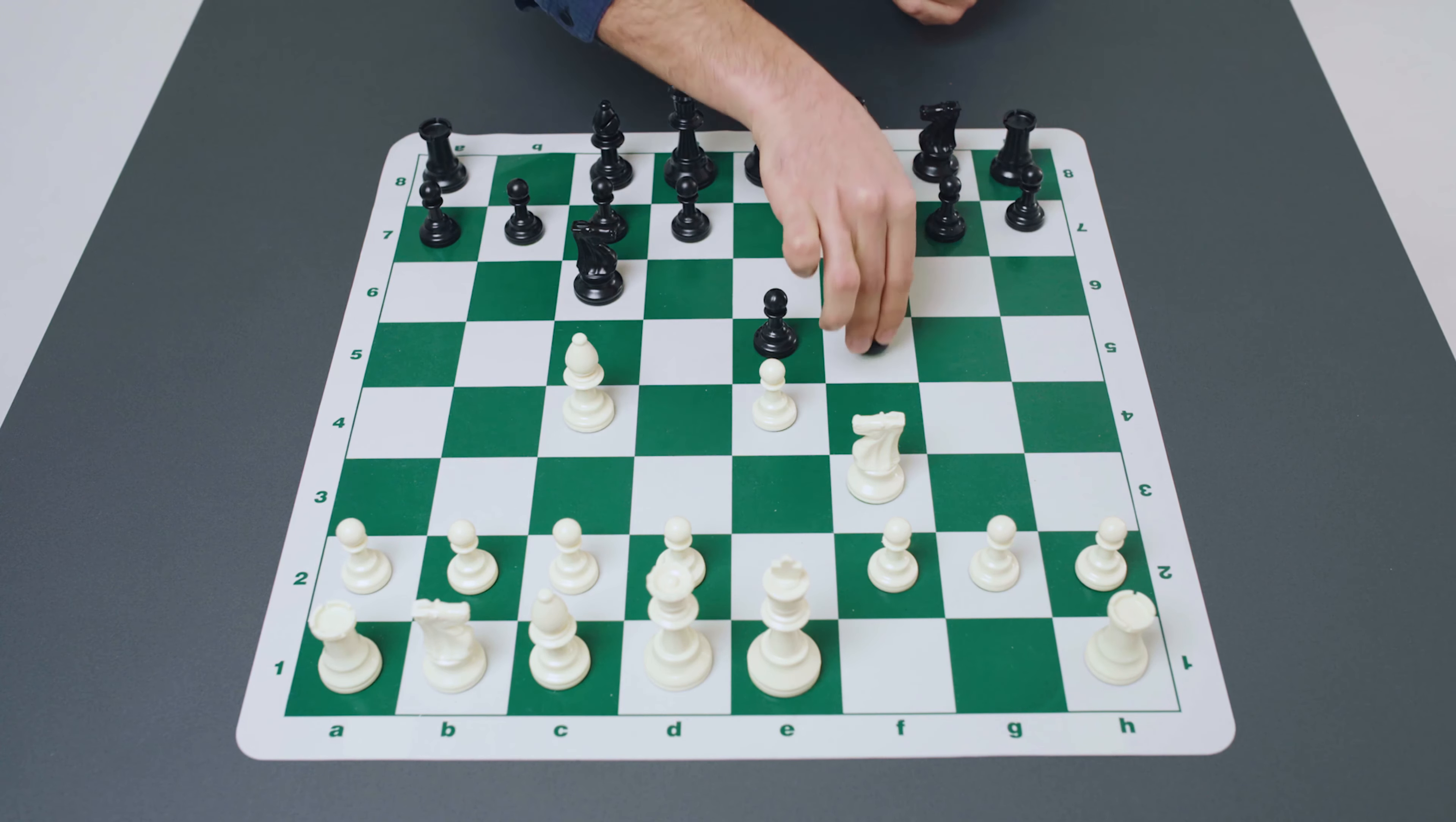So the first category is all the variations that arise after the move bishop to c5. This symmetrical option for black is extremely natural and was therefore the first, the most popular response originally in the beginning of this opening.